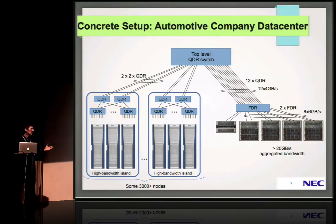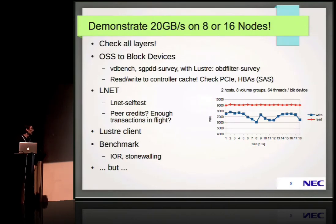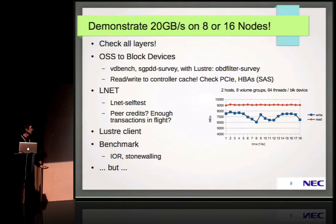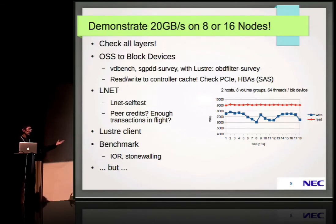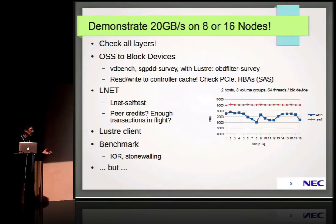Looking at the specs of the wires, it looked sufficient — we were expecting more than 20 gigabytes per second aggregated bandwidth from the file servers, connected with 12 QDR links worth 48 gigabytes per second. But it was not that easy to demonstrate the performance, so we had to check all layers. First layer: OSS to block devices. We tested block device performance with all sorts of tools, and it turns out the performance is actually faster than NetApp advertises — significantly more than six gigabytes per second out of the block device, nine gigabytes per second in write and nine in read.